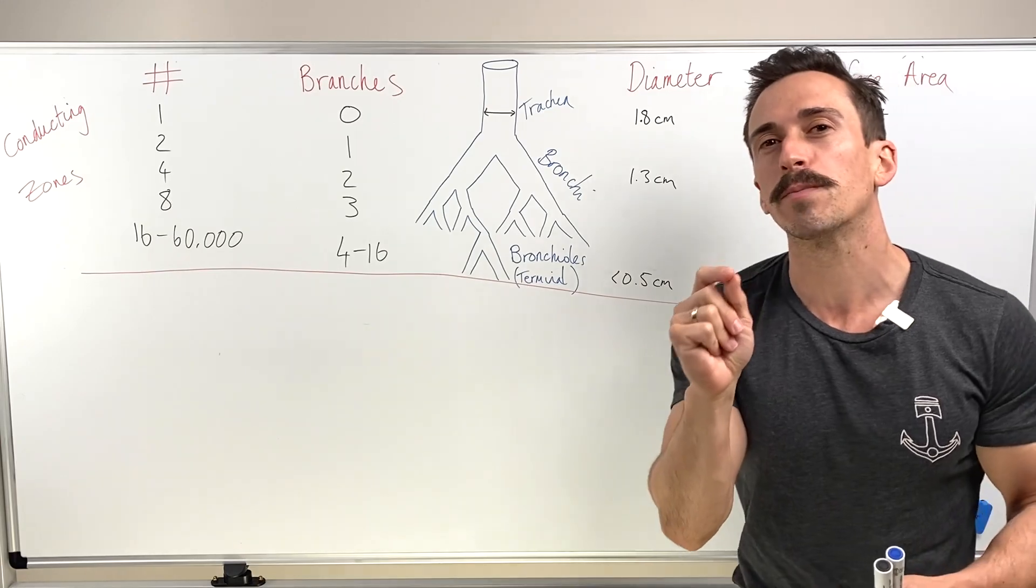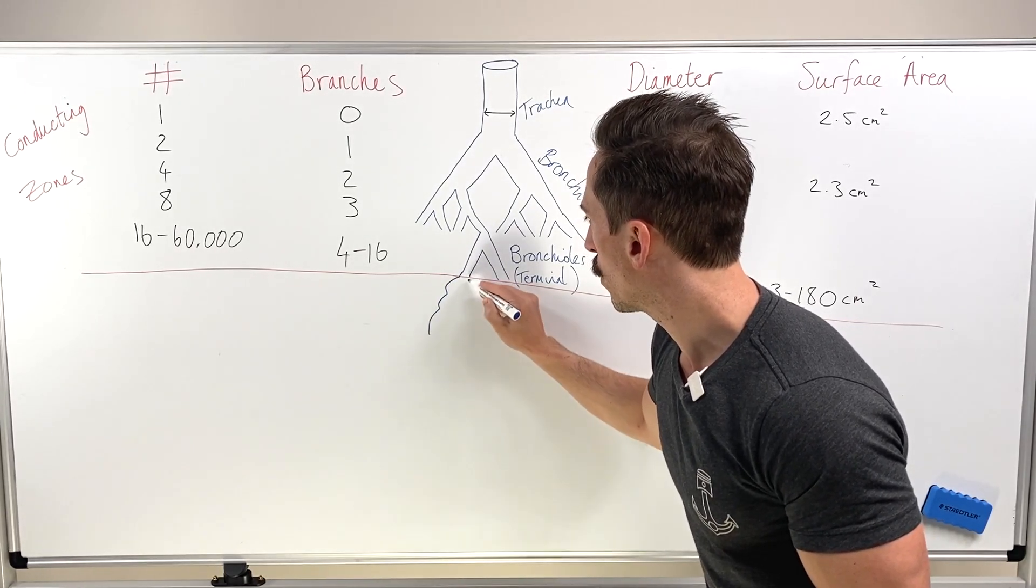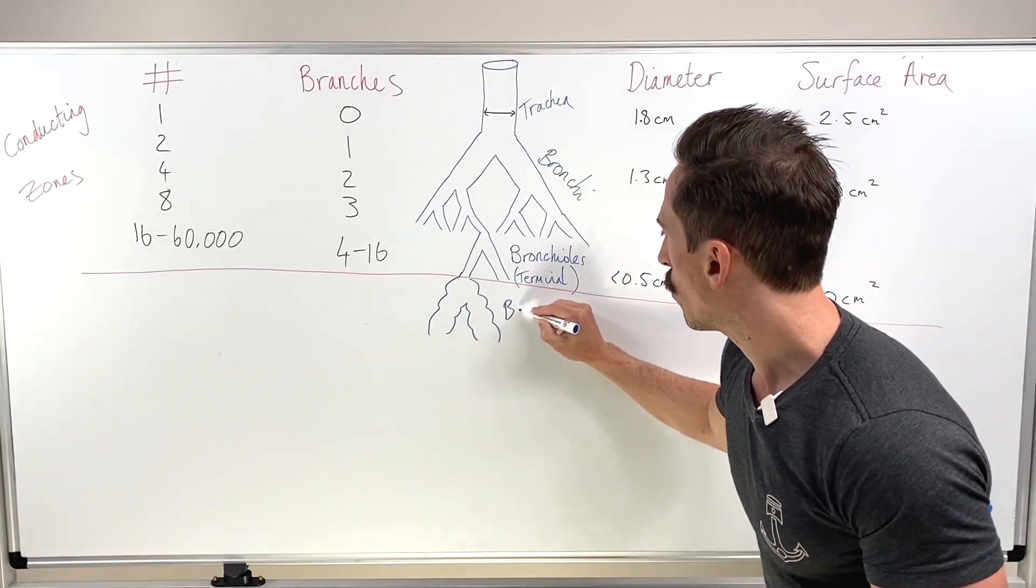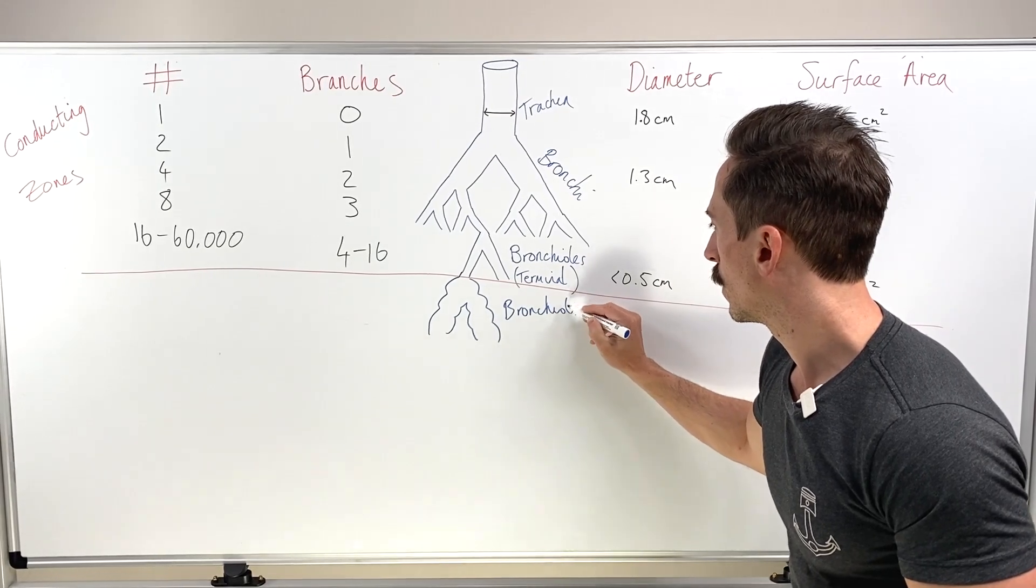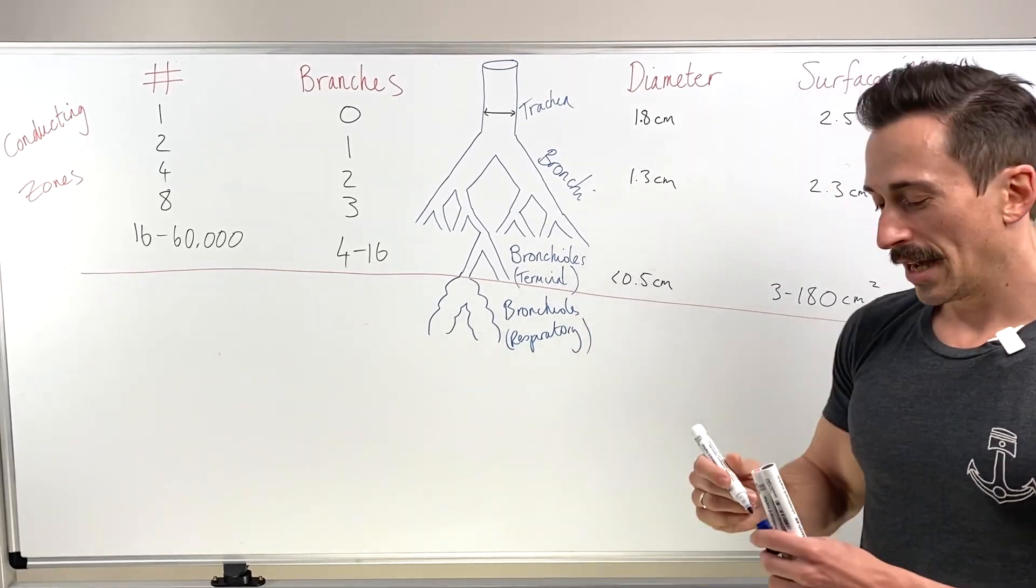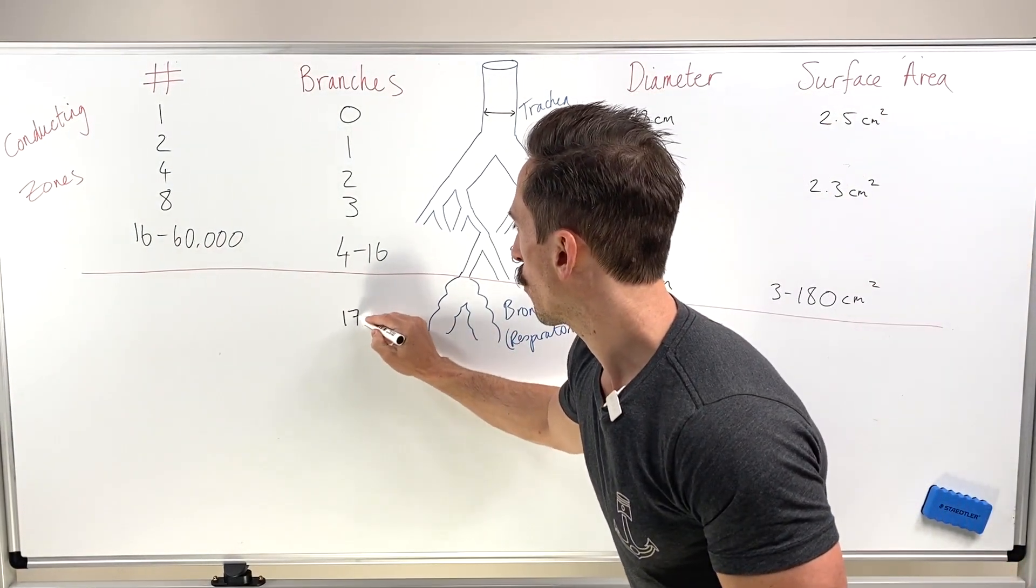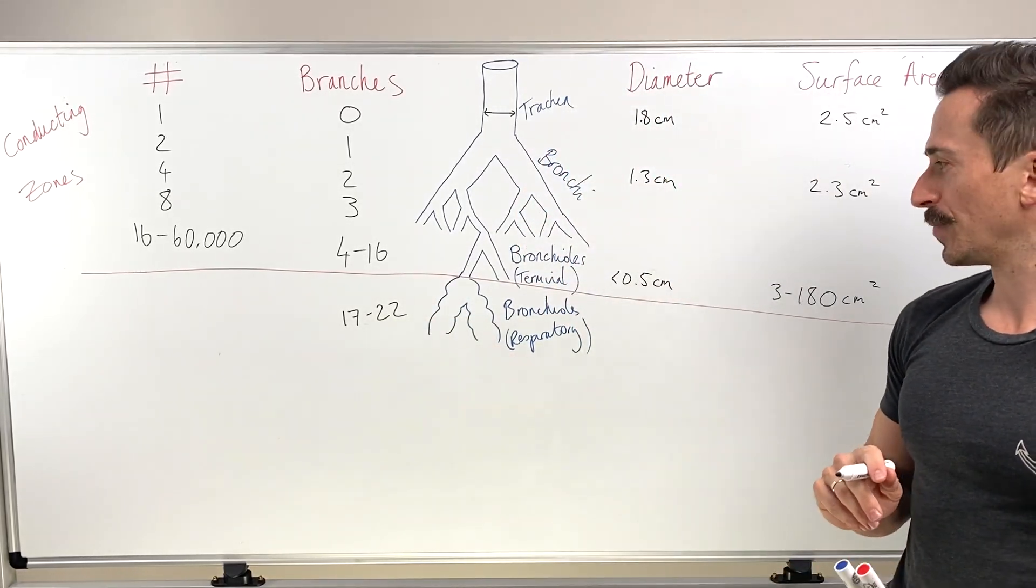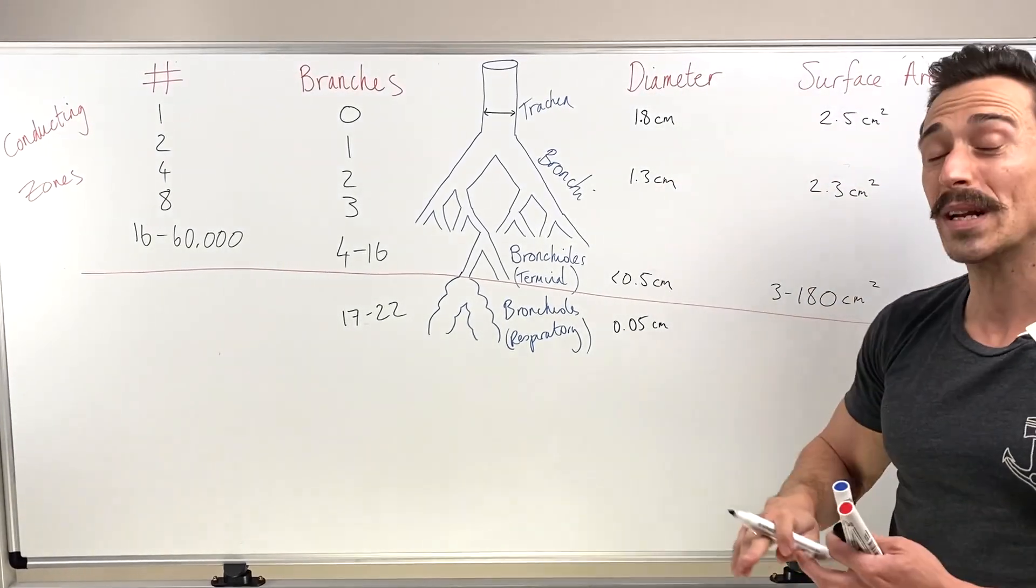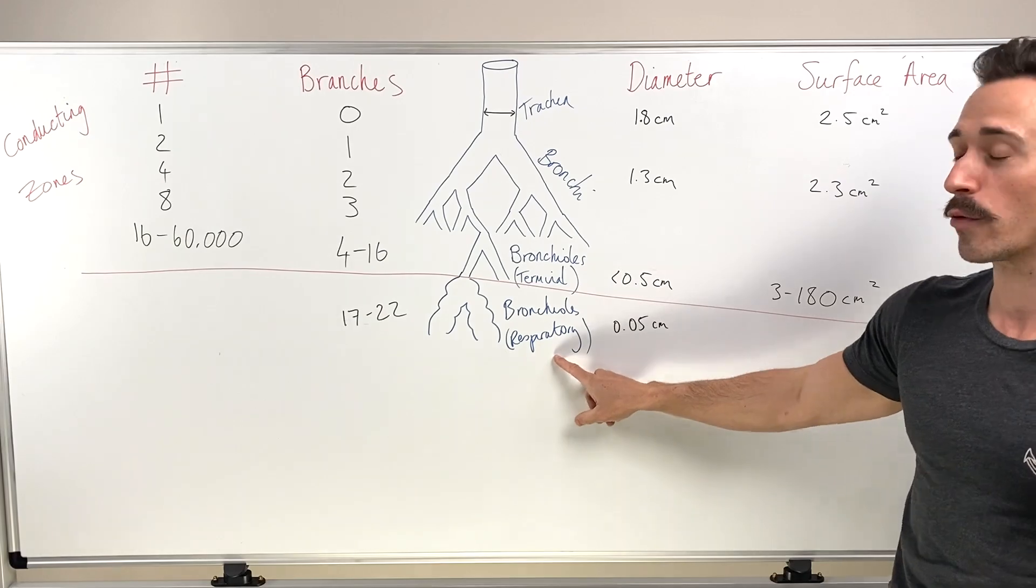Now we're moving into an area called the respiratory zones. And the next set of branching is another set of bronchioles, but they're called respiratory bronchioles. We can start exchanging gas here if we need to. And this is going to branch from the 17th branch to the 22nd branch. Now the diameter here is going to be around 0.05 centimeters. So really tight. That's 1/20th of a centimeter. Take a centimeter and divide it by 20 equal parts and just take one of those.